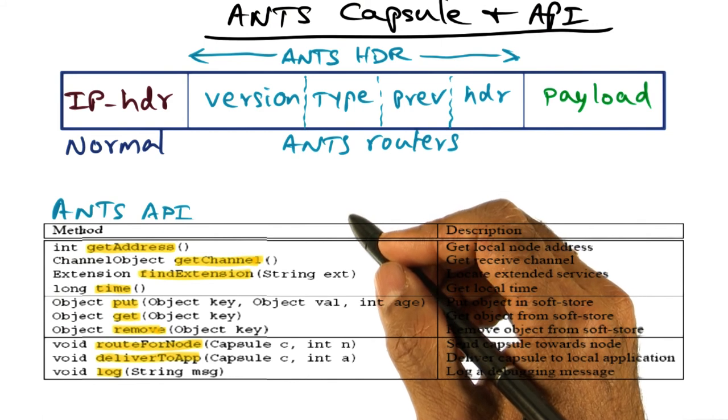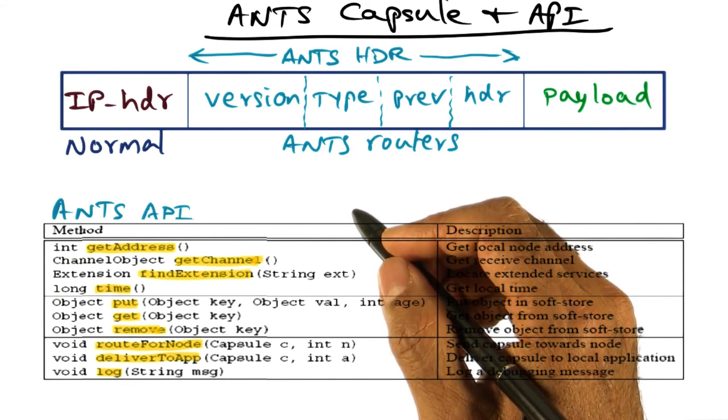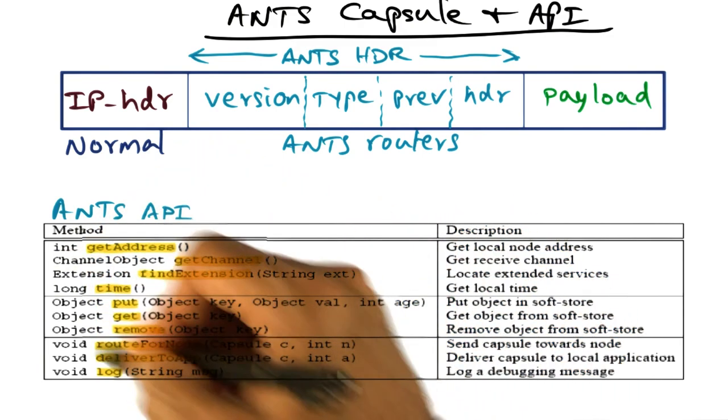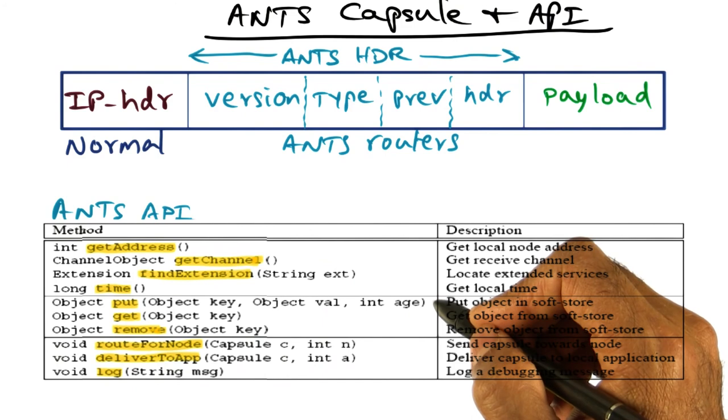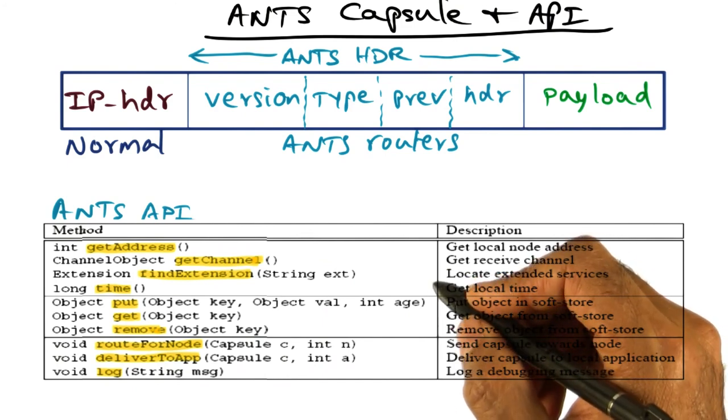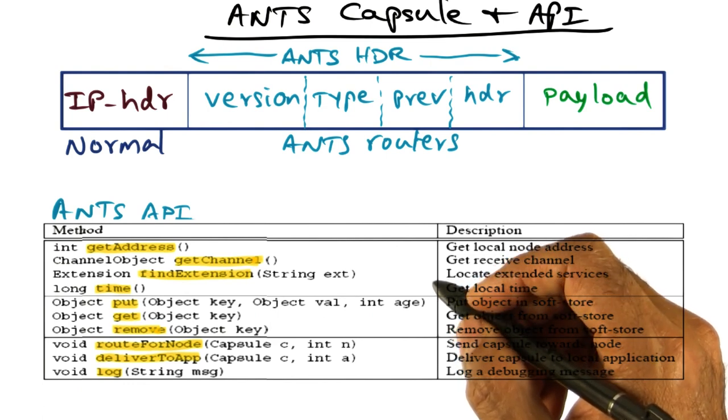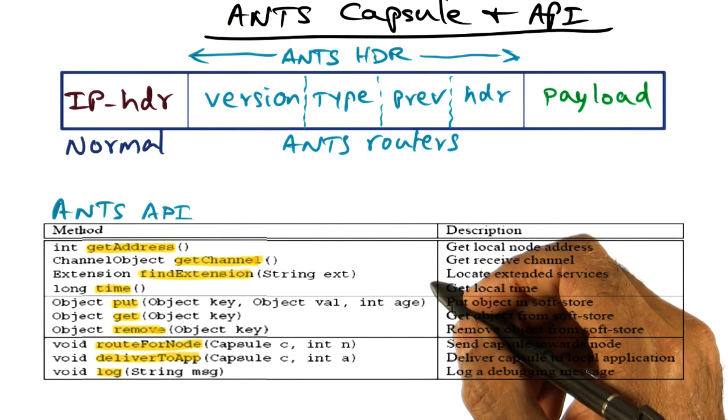So the API is very simple and allows you to generate very simple router programs that are easy to program because the APIs are simple, easy to debug, easy to maintain and understand. And the program itself is pretty small so it's not going to take a humongous amount of time to do the packet processing.